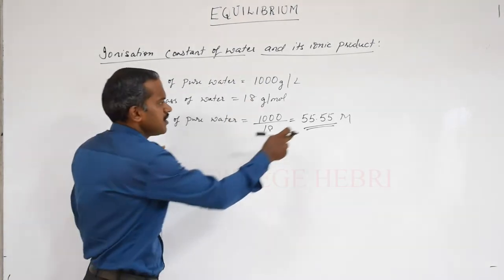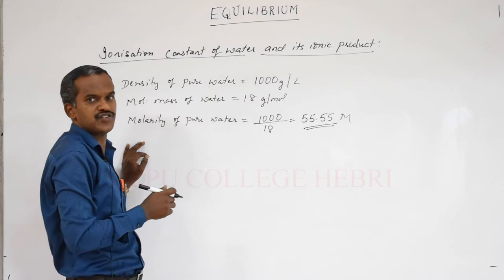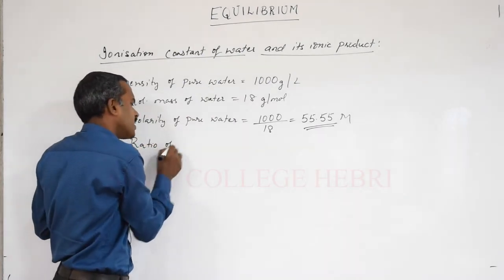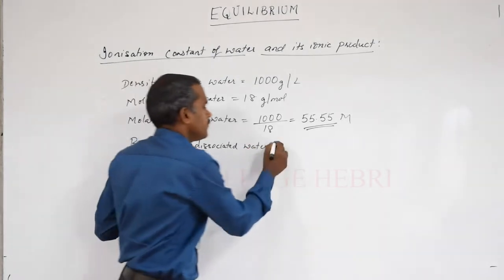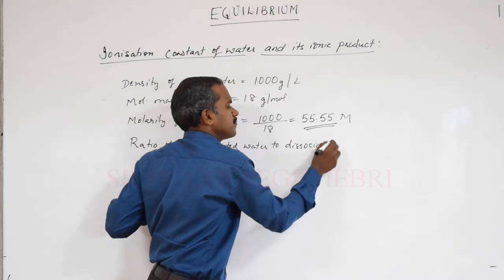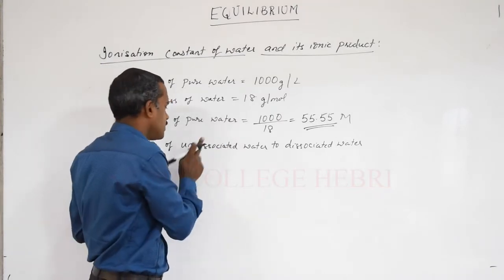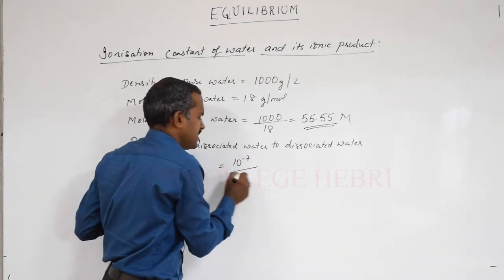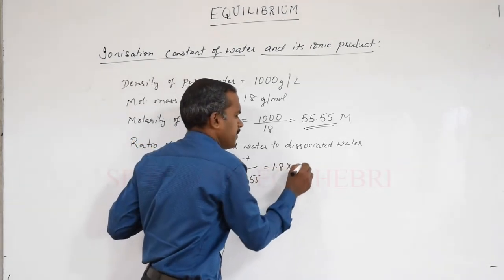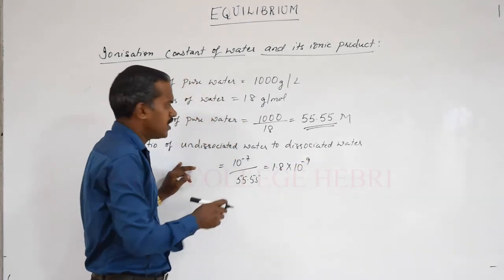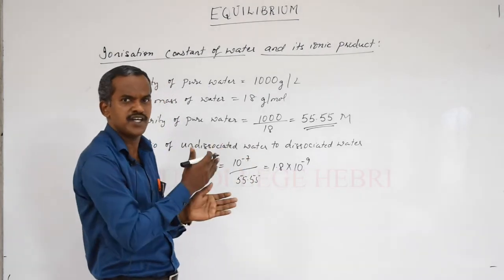The dissociated water has a concentration of 10⁻⁷ molar, and the undissociated water has a molarity of 55.55. The ratio of dissociated to undissociated water is 10⁻⁷ divided by 55.55, which comes to approximately 1.8×10⁻⁹, approximately equal to 2×10⁻⁹. This means the equilibrium is strongly towards the undissociated water.